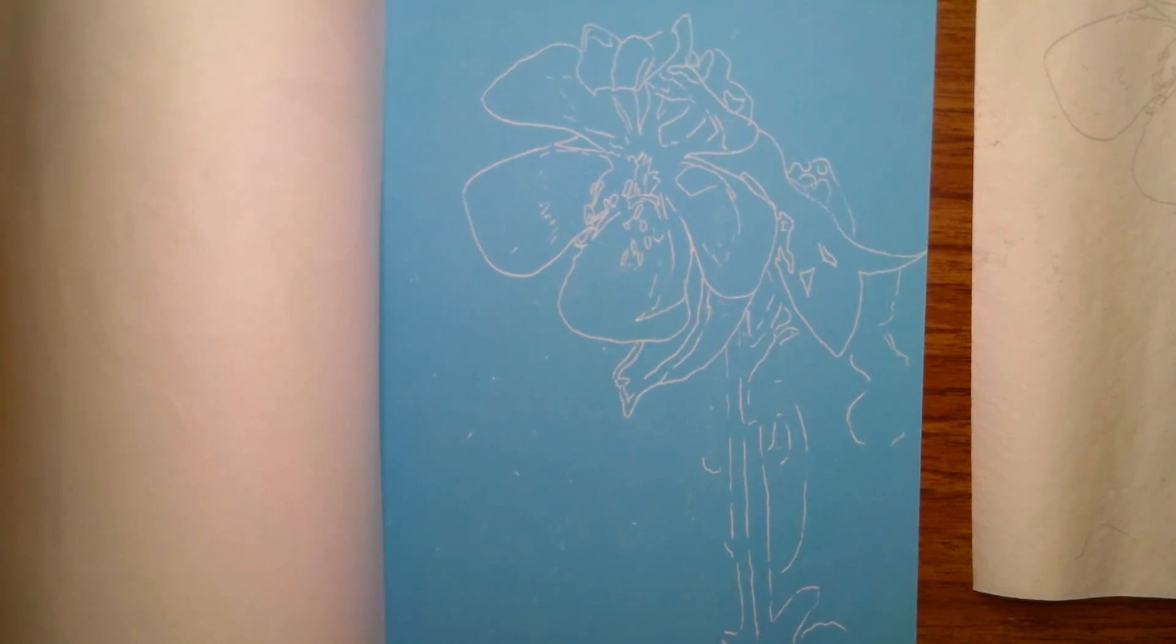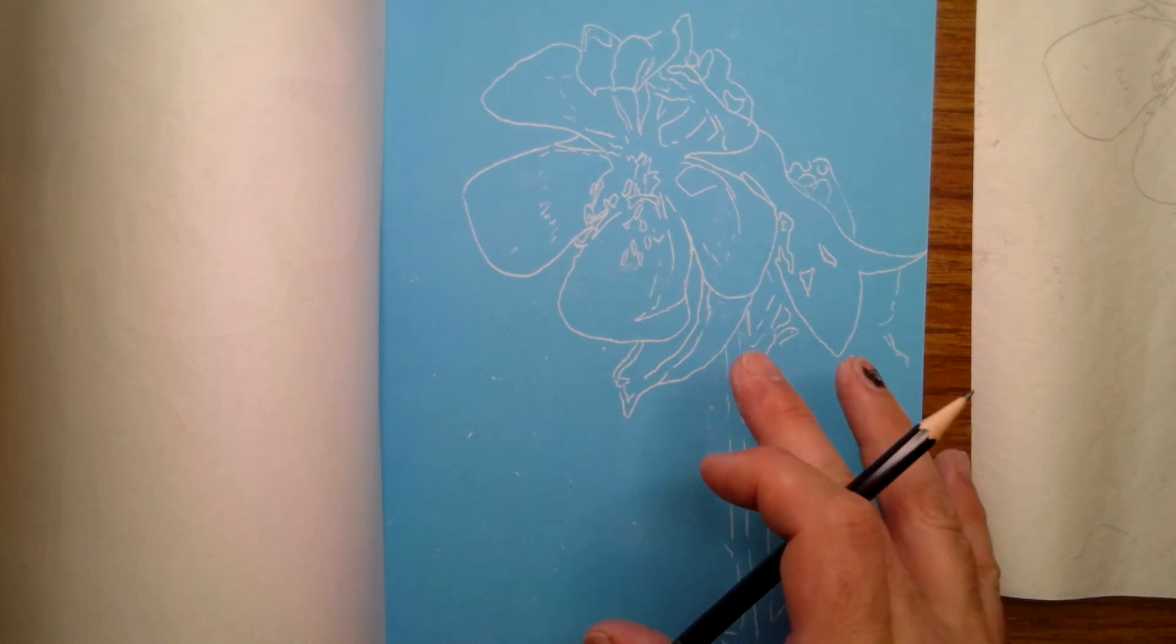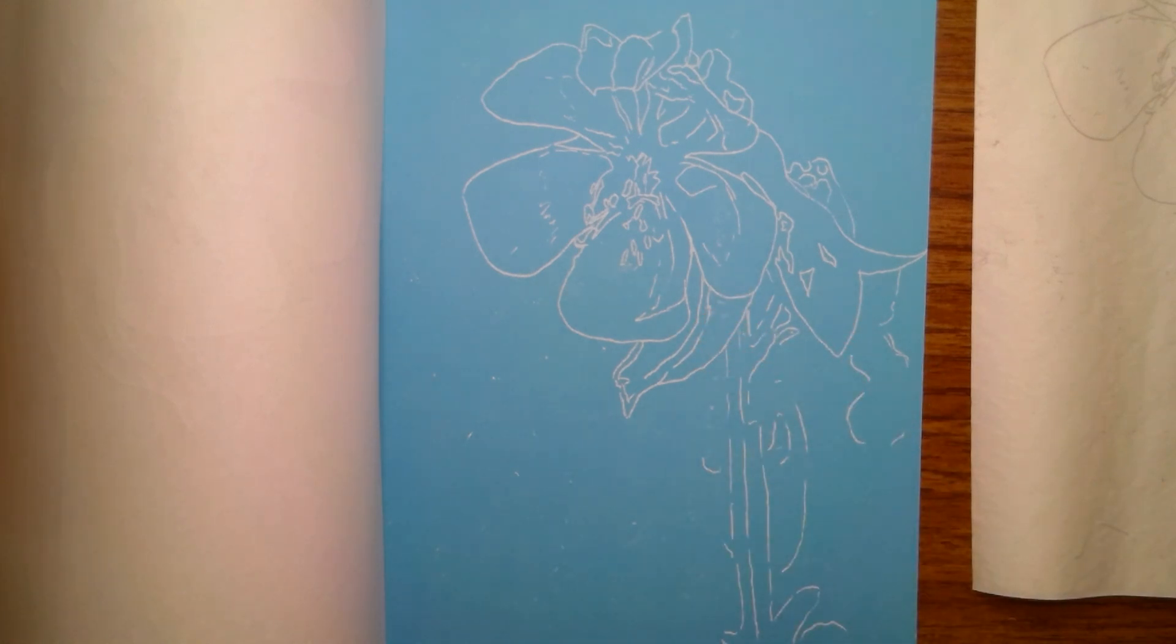All right, so that gave me a strong contour line of my finished flower. I'm going to keep this, set it aside. Now what I want to do is practice the techniques on the scrap piece of blue paper. So that'll be the next step - setting up a rough to practice.